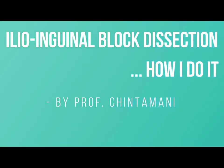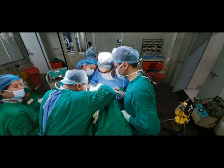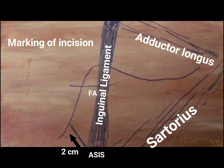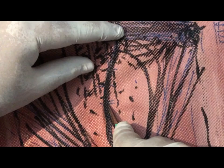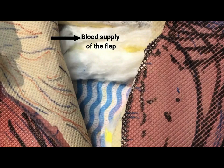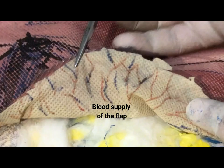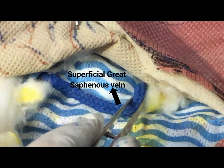Ilio-inguinal block dissection is usually performed for cancers ranging from cancer of the penis, cancer of the genitourinary system in males and females, and also malignancies involving the lower limb. Depending upon what cancer is the reason for doing the block dissection, the incisions may vary, the type of lymph nodes and the number of lymph nodes removed may also vary. One can simply do the inguinal part of the dissection, or can do more of the iliac part, as one does in bladder carcinomas. In the iliac part, the upper limit is the bifurcation of the common iliacs, the lateral limit is the genitofemoral nerve, medially it's the bladder, and in the depth it's the obturator nerve.